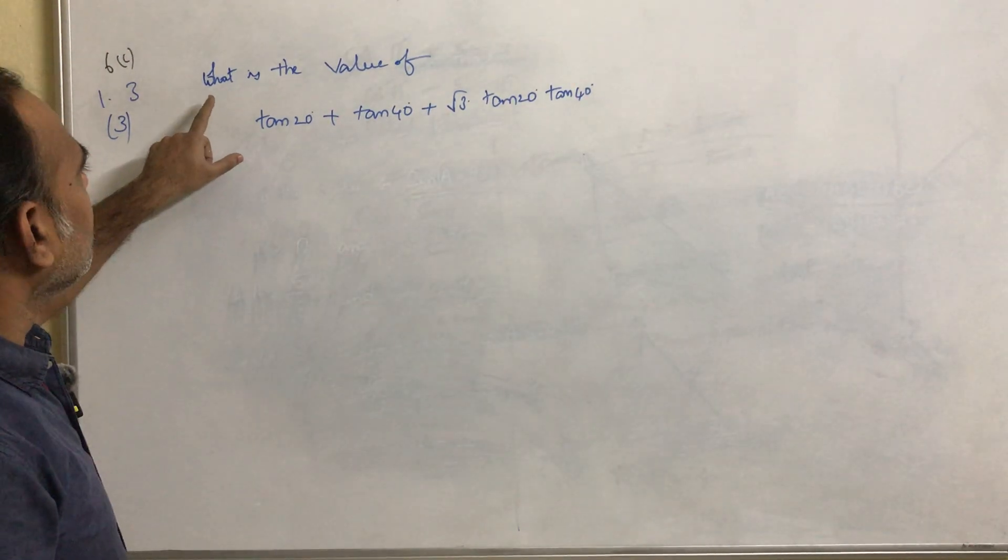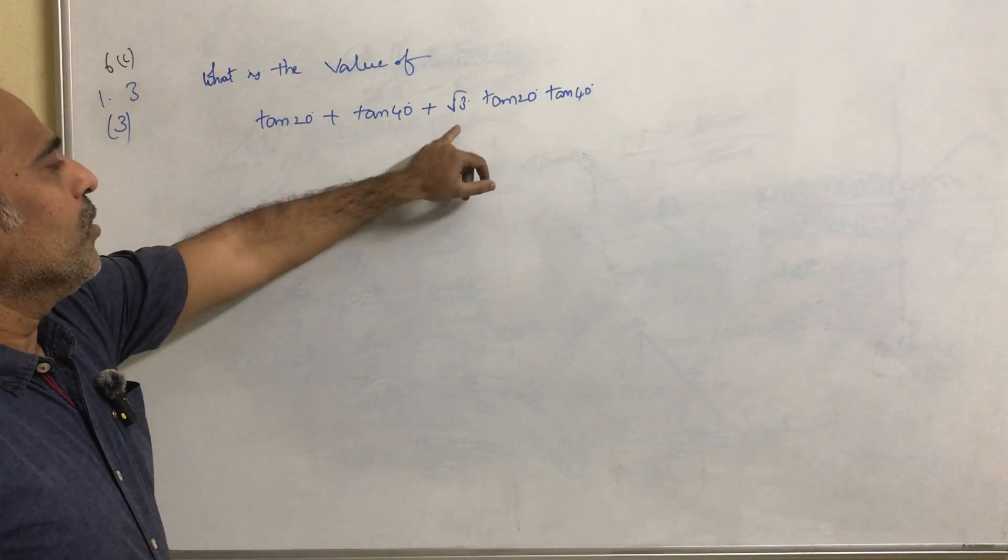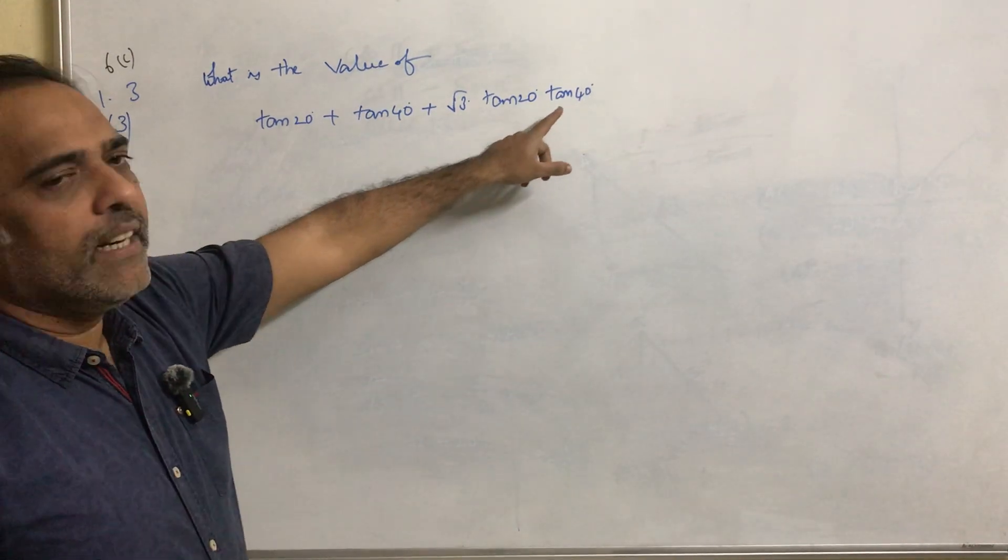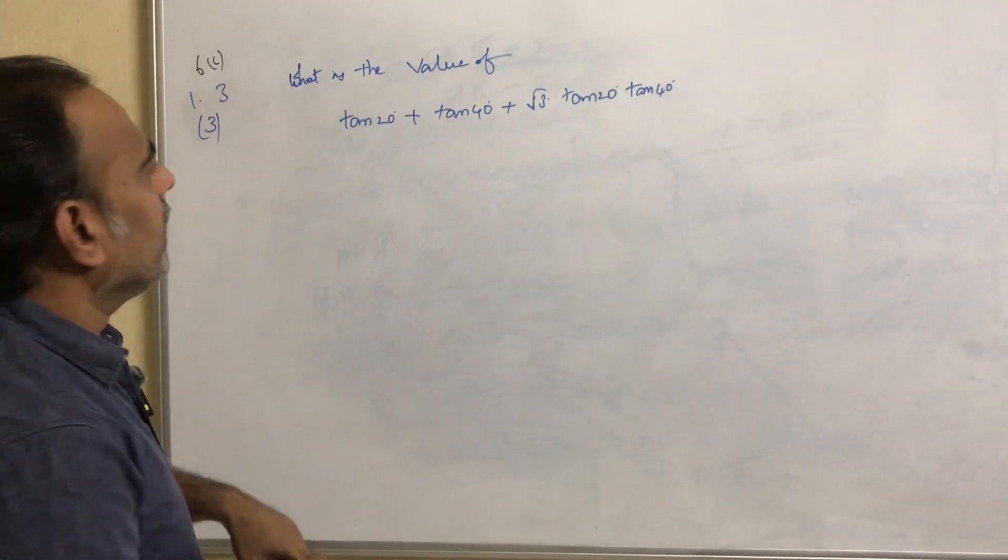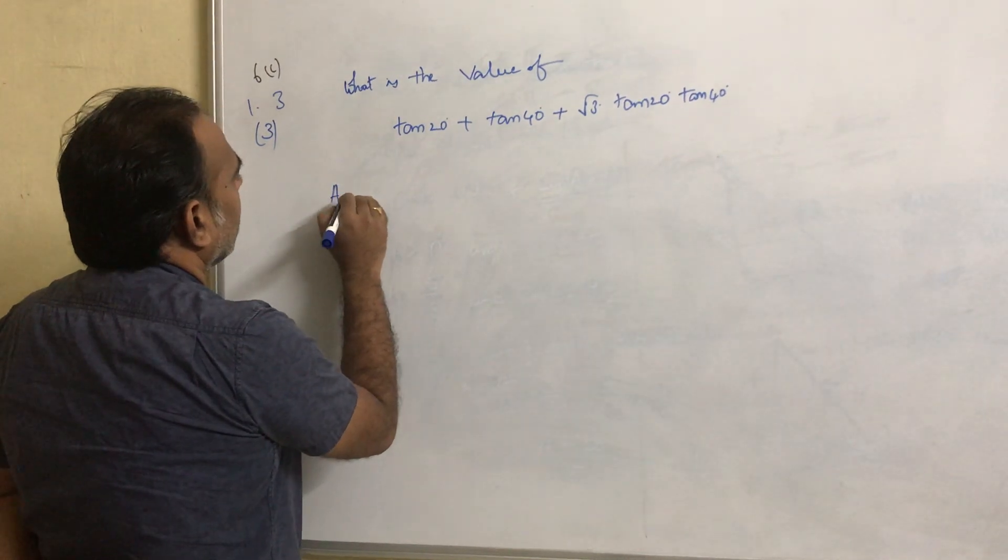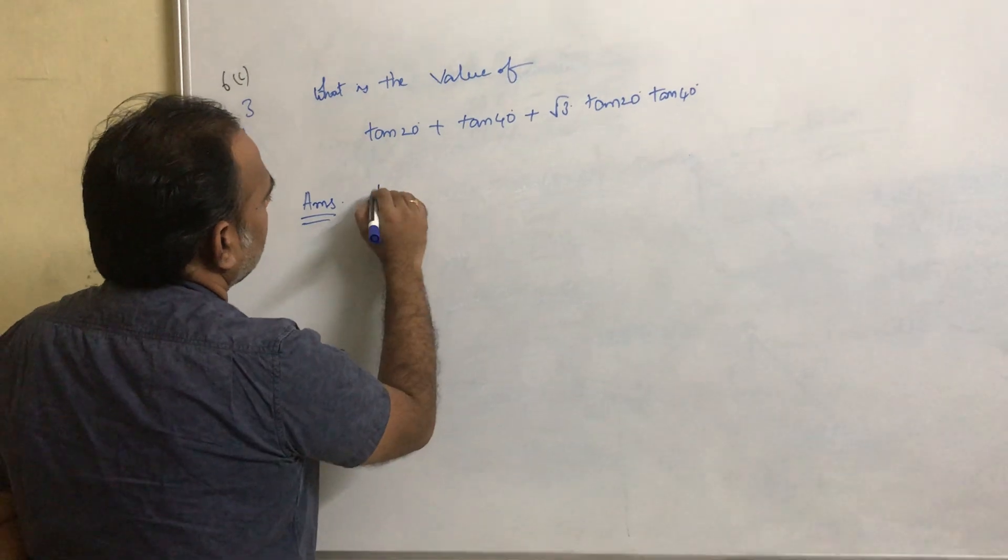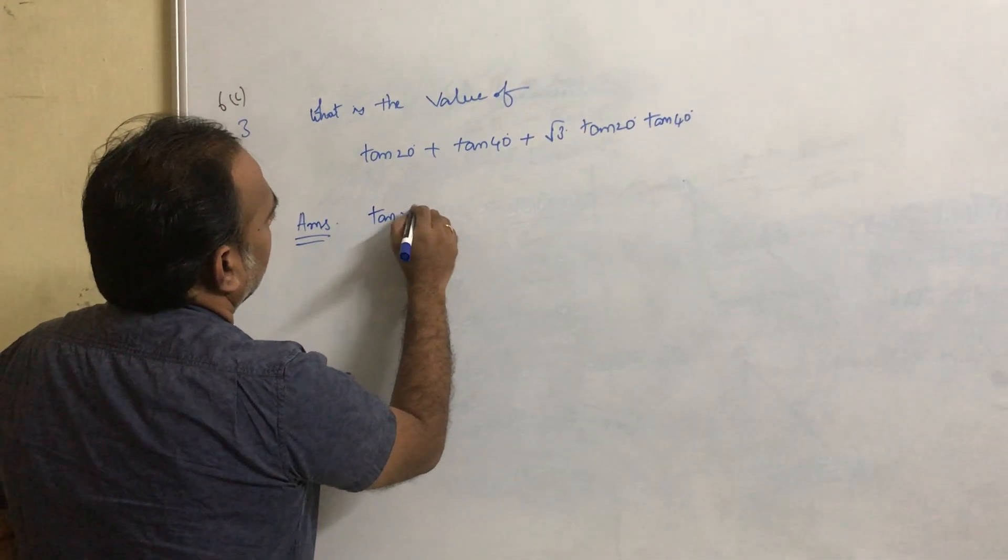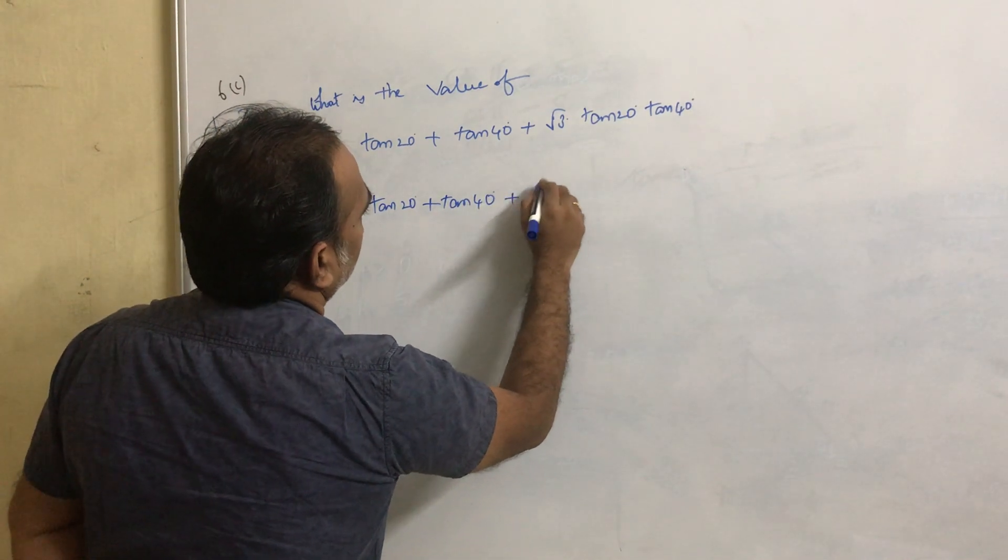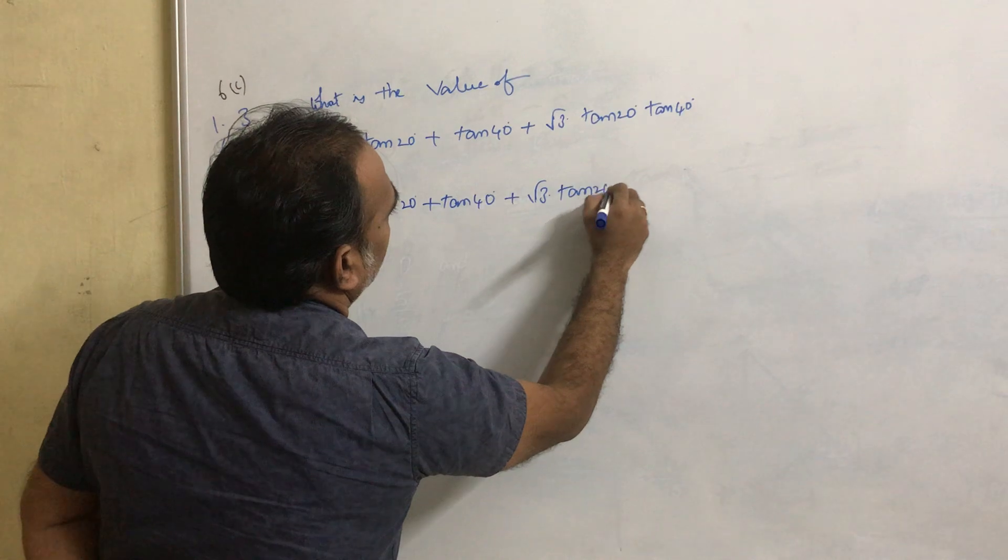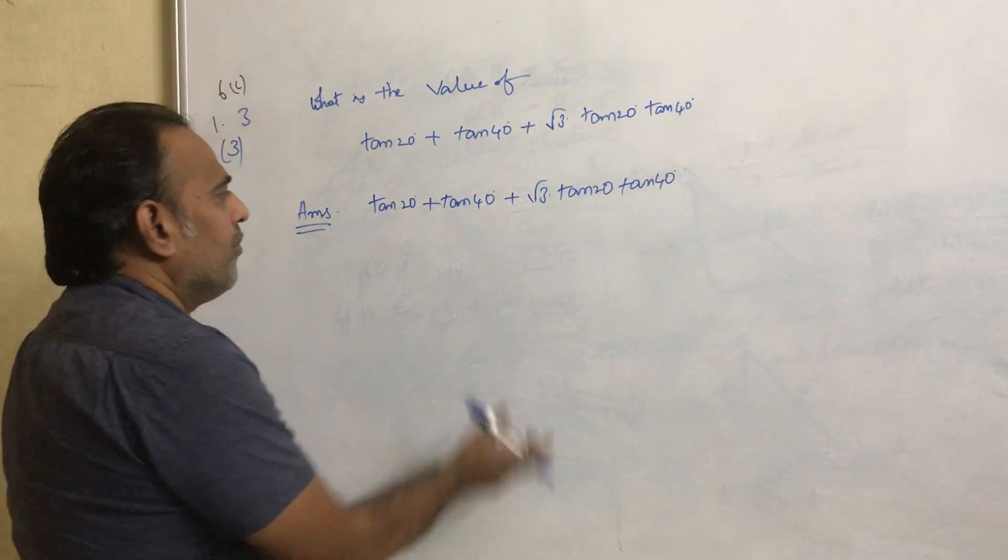Our next problem is: what is the value of tan 20° plus tan 40° plus root 3 into tan 20° tan 40°? This problem is 61.33. First, write what is given. We need to find the value of tan 20° plus tan 40° plus root 3 into tan 20° tan 40°.